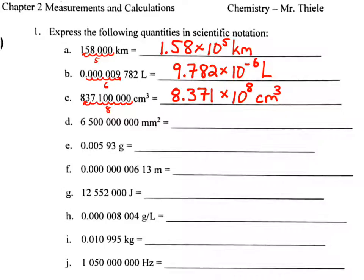Next, we have 6,500,000,000, so we will be moving our decimal point nine places to the left. There are only two significant digits here, so that's all that we write. We have 6.5 times 10 to the ninth square millimeters.